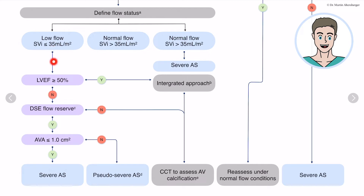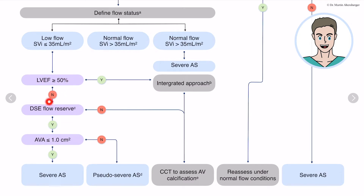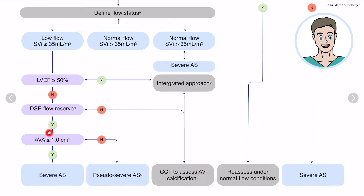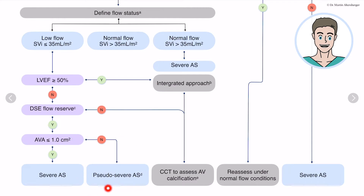When you have low flow and a low ejection fraction below 50%, we need to see if there is flow reserve — contractility reserve. If it is not present, even with stress echocardiography showing no rise in gradients, we also go to the CT scan. If there is flow reserve and the aortic valve area remains below one square centimeter throughout the stress echo, we go for true severe aortic stenosis. If the aortic valve area improves above one square centimeter, we have pseudo-severe aortic stenosis.